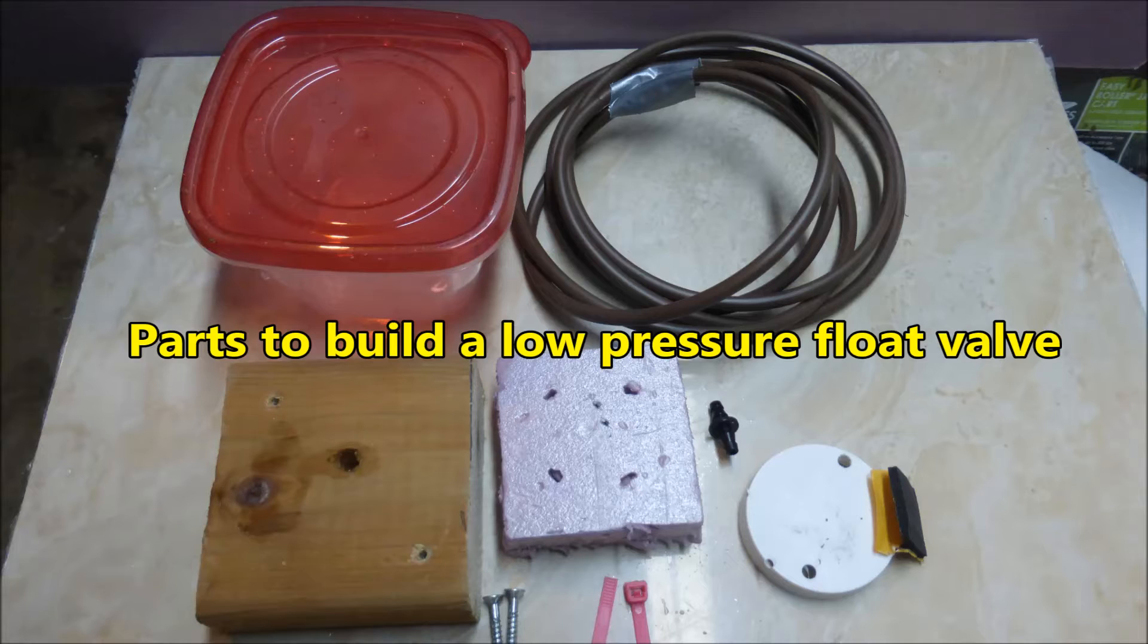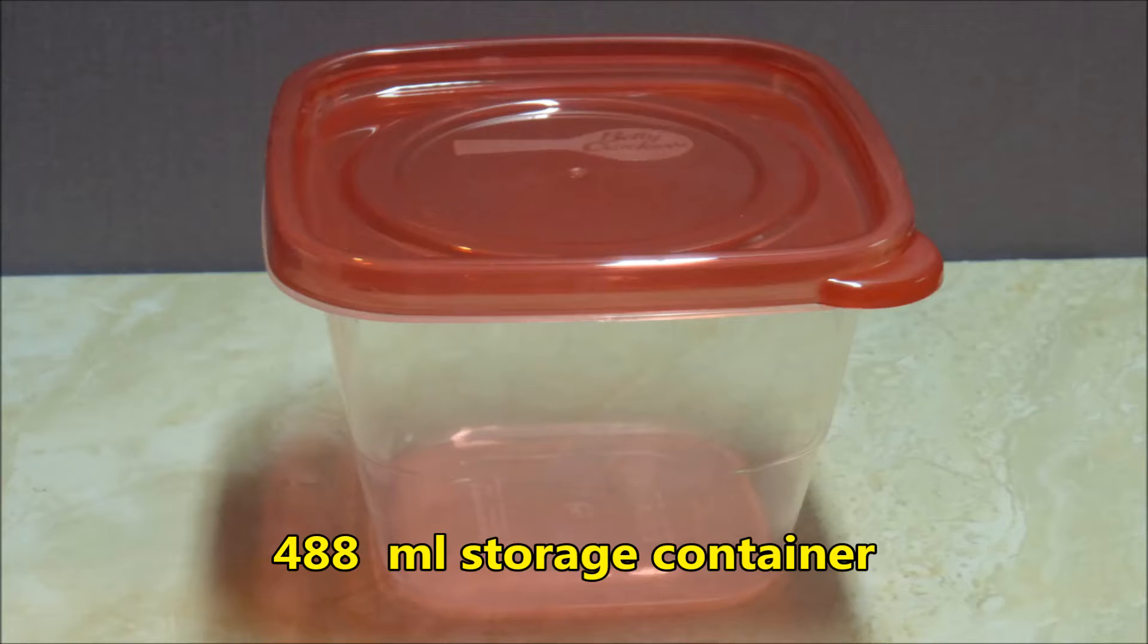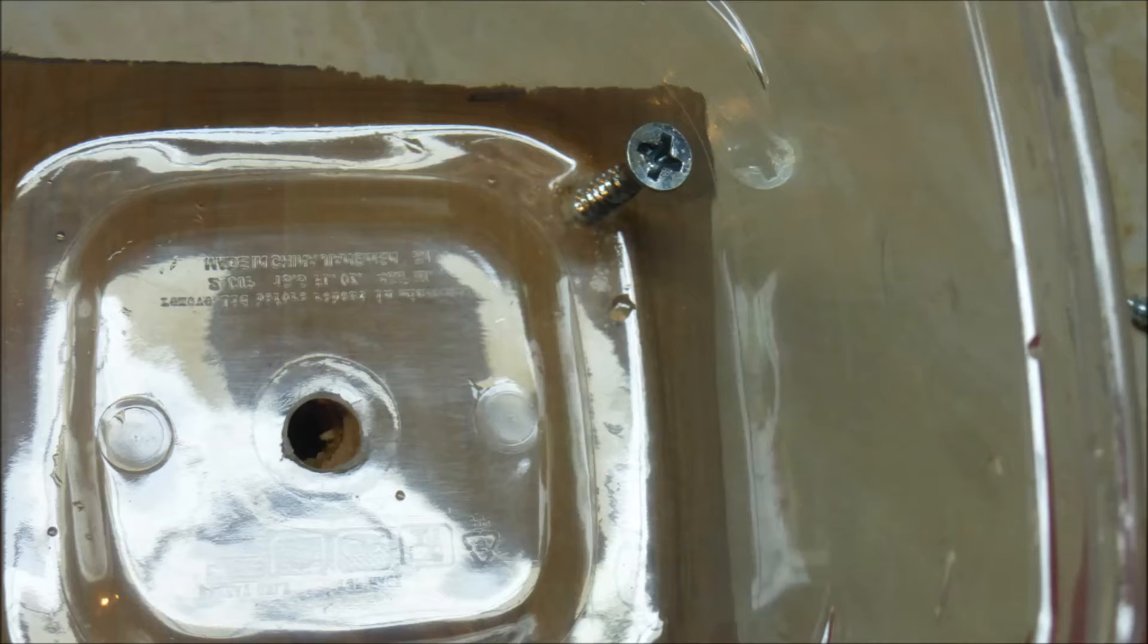This 488 milliliter polypropylene storage container becomes the main body of the float valve. It is fastened to a wooden block with screws. The wood helps to stabilize the nozzle in a vertical position and also keeps the float valve weighted down.